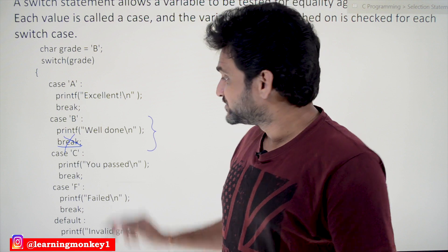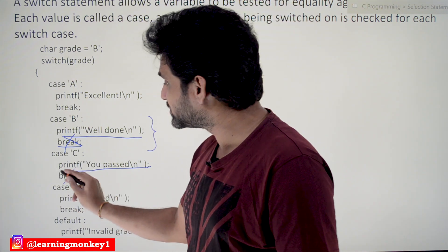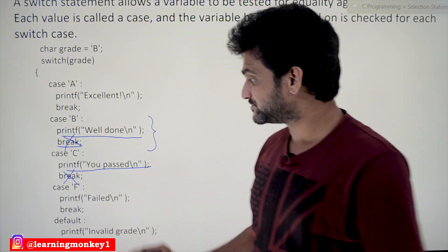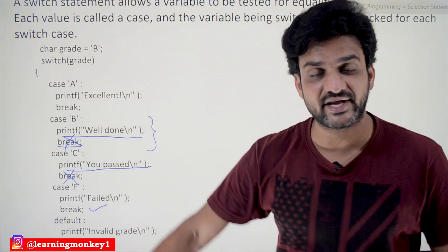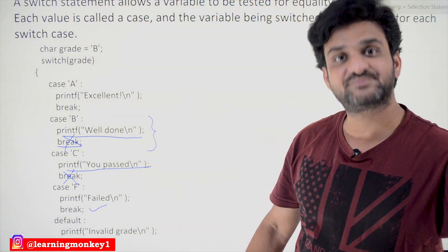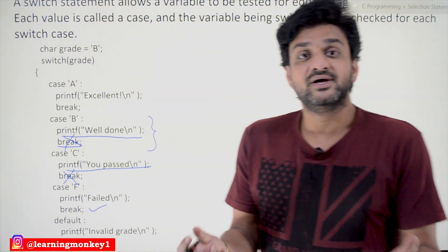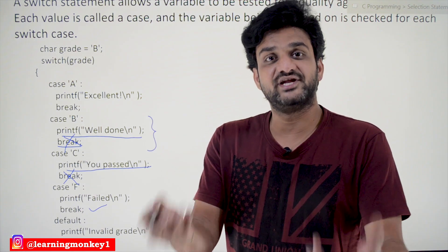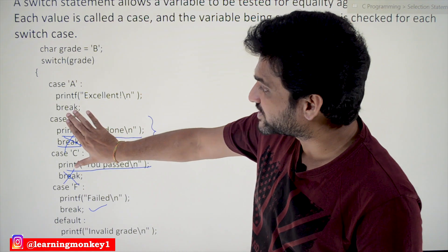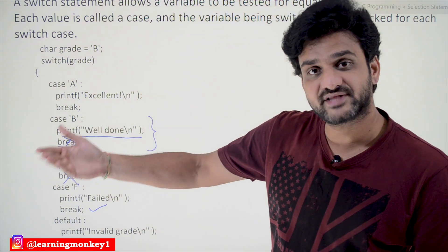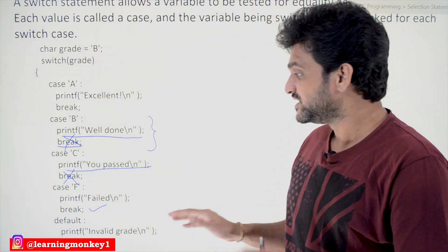For example, if break is not in case B, the printf in case B executes, then the next case's printf also executes, and so on until a break is found — then it exits the switch. There are some programming scenarios where you intentionally want to execute two cases continuously, so in those cases there is no need to give a break statement.